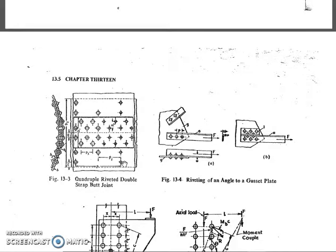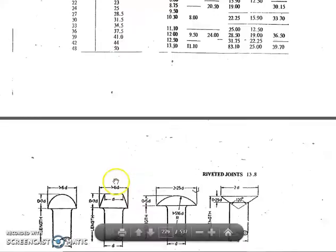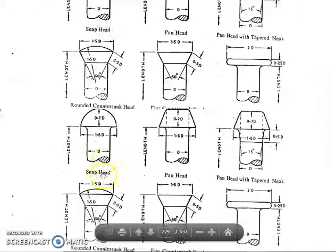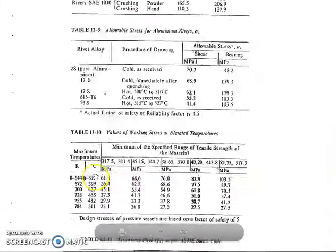The efficiency must be within the range given in Table 13.14 for the selected joint type.